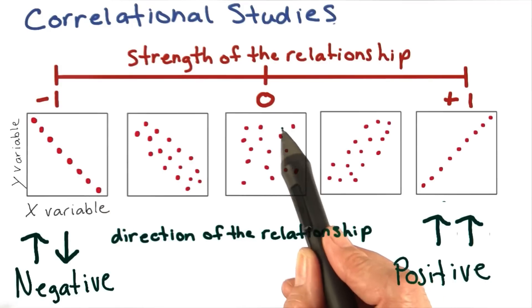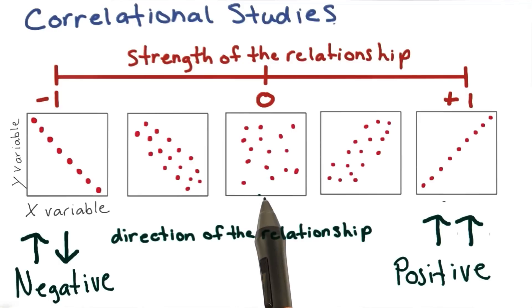In the middle, we can see that our data points are randomly distributed. This would indicate no relationship. In our example, there would be no relationship between the number of sexual encounters and the type of chores.